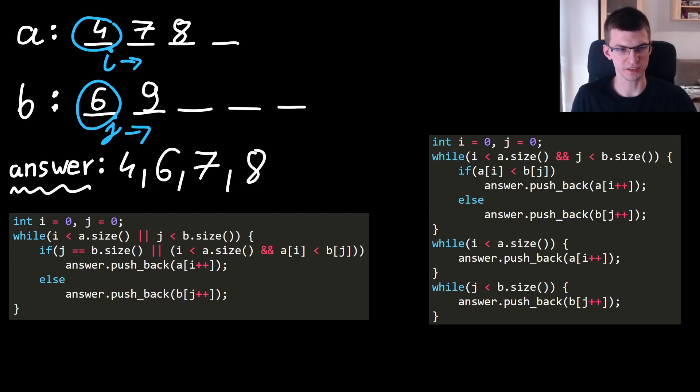Method number 1 is on the left. We create i and j equal to 0 and while at least one of those indices is still within the boundaries of its array, we continue. Maybe one of them is already outside of the array, for example j is equal to b.size.